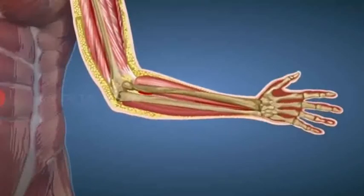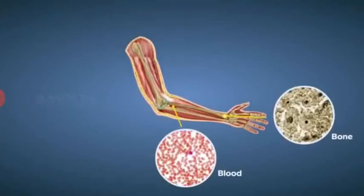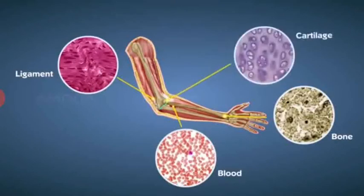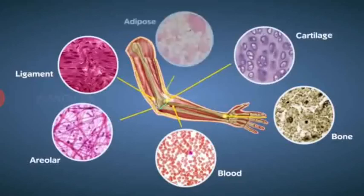Connective tissues are subdivided into blood, bone, ligament, cartilage, areolar, and adipose tissue.